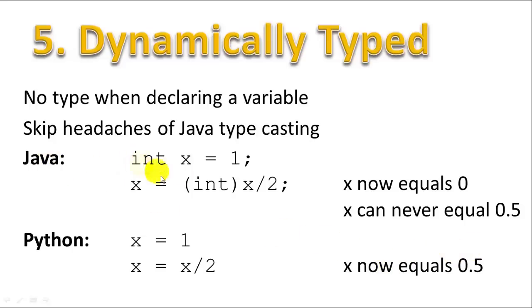In Java, if you want to use X to store integer values like 1, 2, 3, 4, 5, you have to first declare X as an integer. And once you've done that, X has to always be an integer. X can never equal one-half. So if you take X equals X divided by 2, you would expect X to equal 0.5, but it doesn't. In fact, X can never be 0.5.